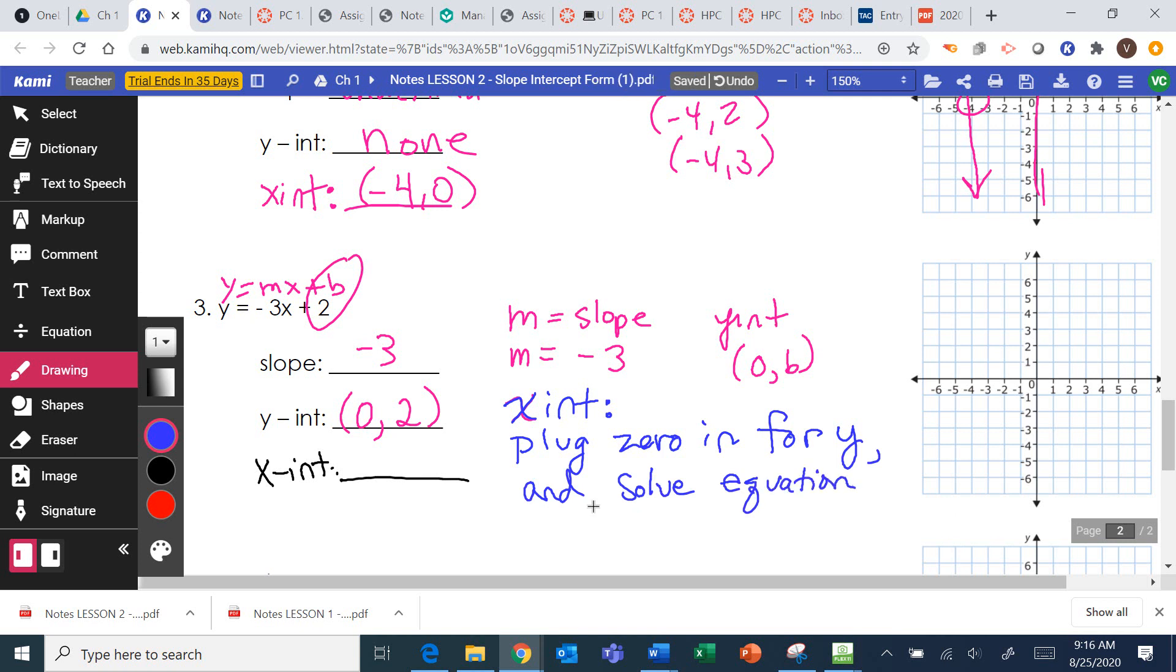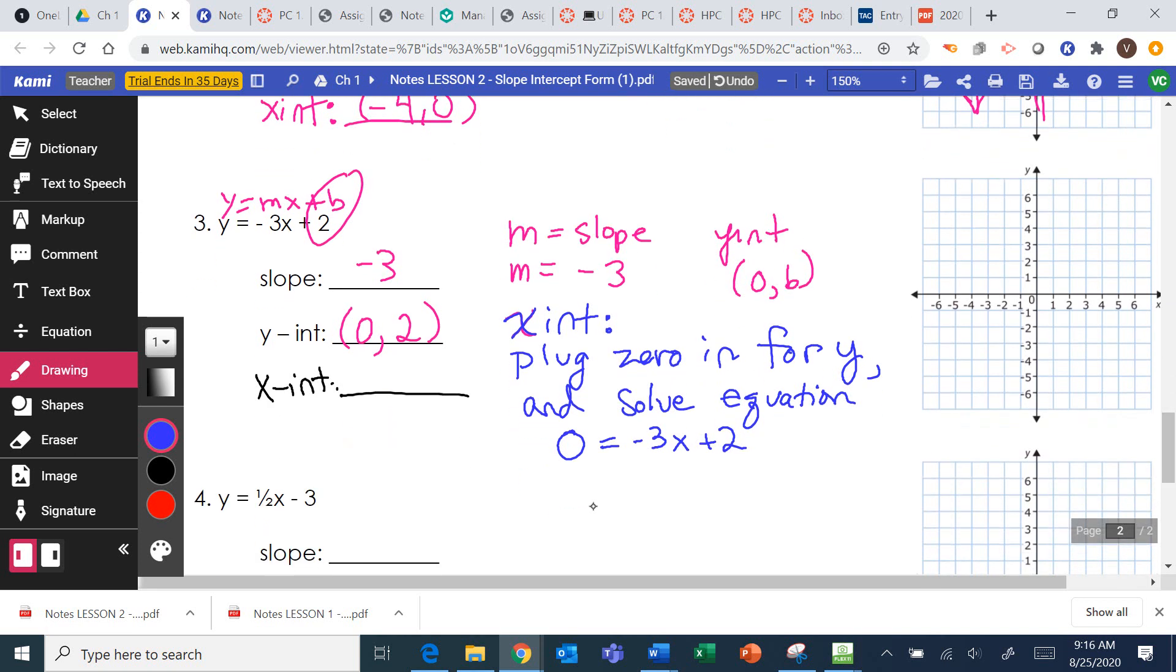So you have to plug in 0 for y and then solve the equation. So I will have 0 equals negative 3x plus 2. So now we're going to solve that from Algebra 1 and Geometry stuff. We need to subtract 2 from both sides. So we are left with negative 2 equals negative 3x. And then remember, if we're multiplying by negative 3, then we have to divide by negative 3. So I'm going to get x equals 2 over 3.